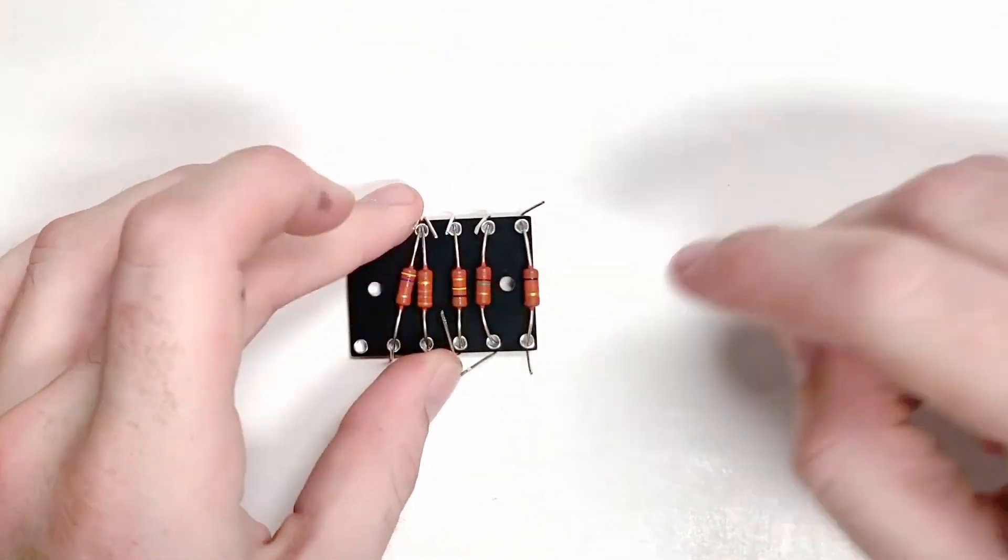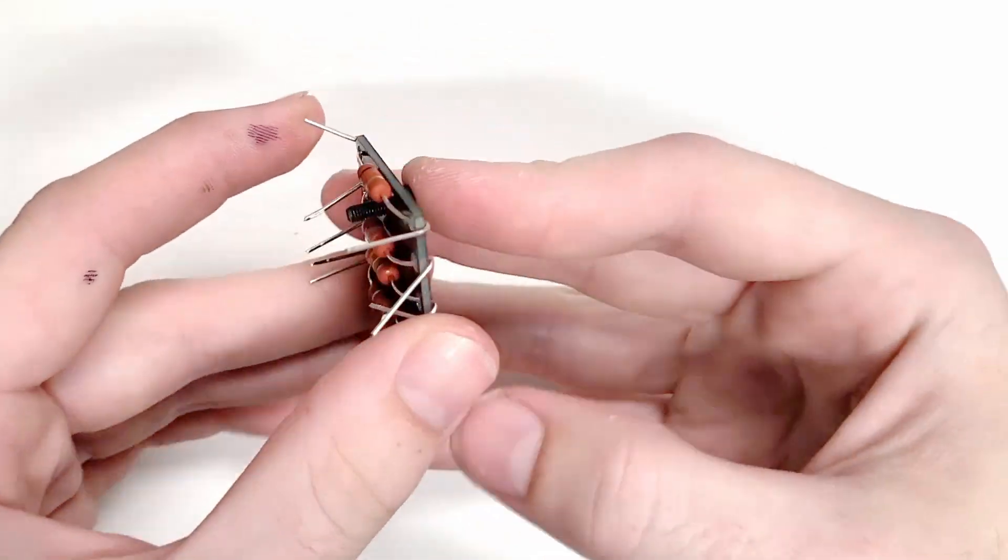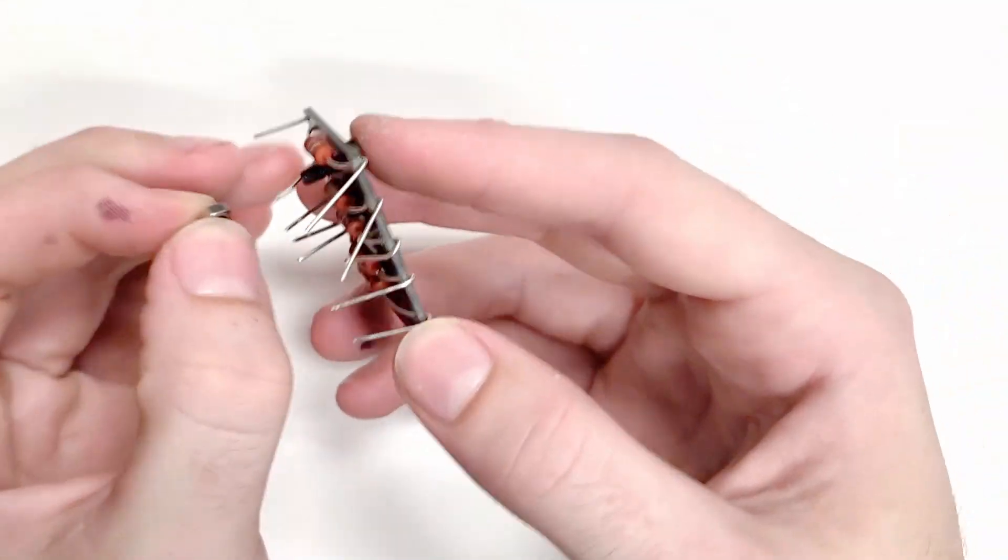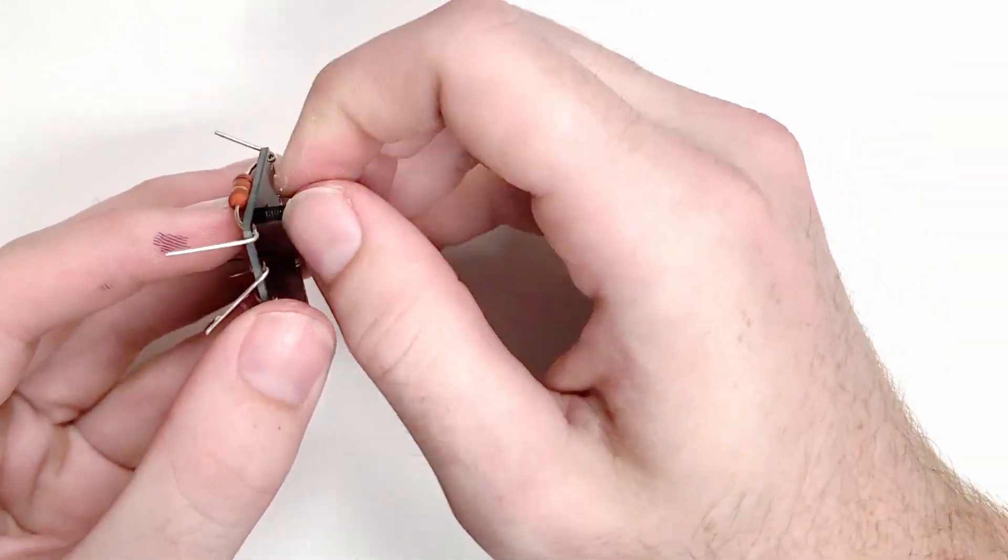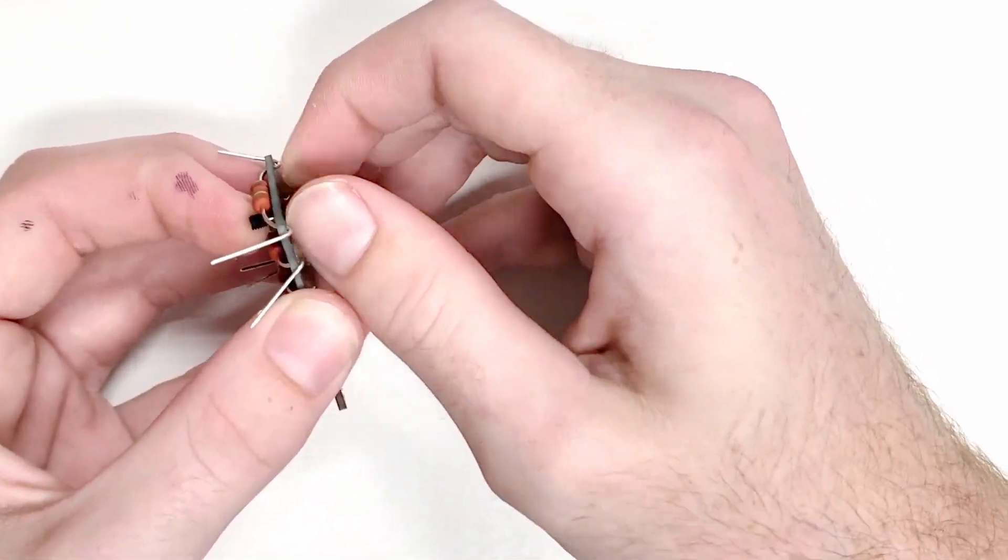This process can then be repeated for all resistors on the board. As the board is going to be a little crowded with everything installed, I like to install placeholder mounting hardware while installing components. This allows me to easily lay out the components in a way that leaves room for the mounting hardware.